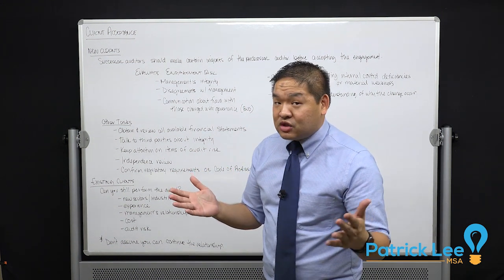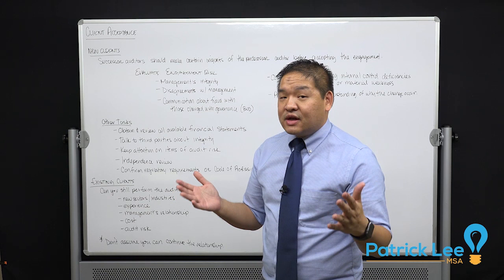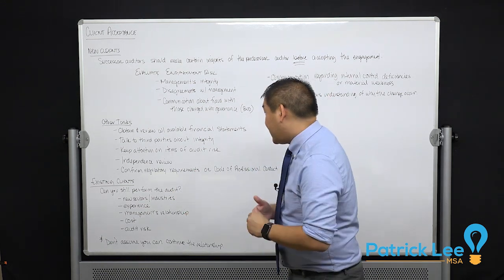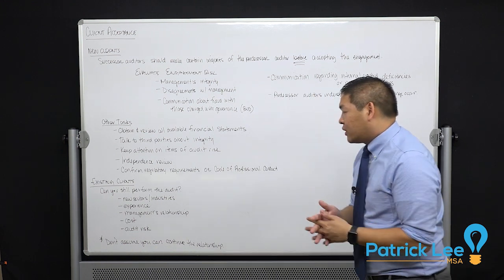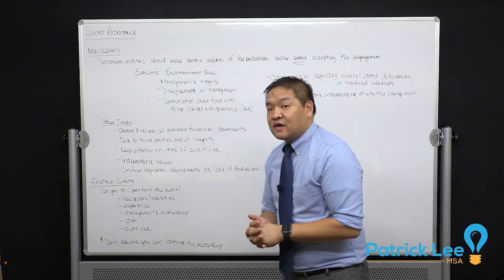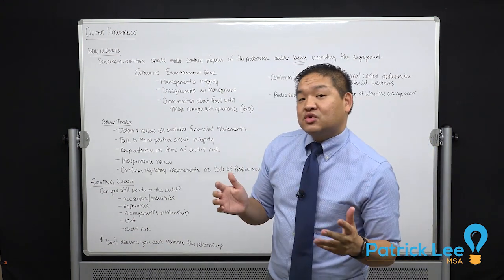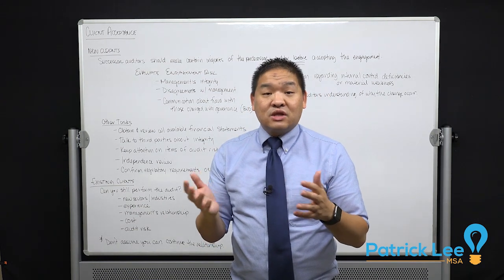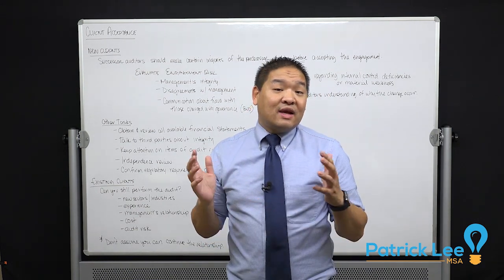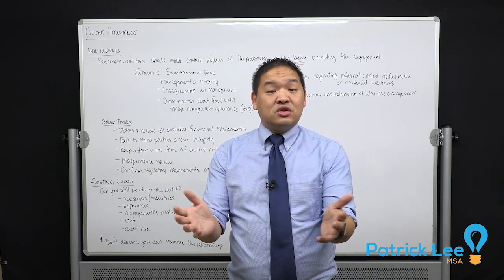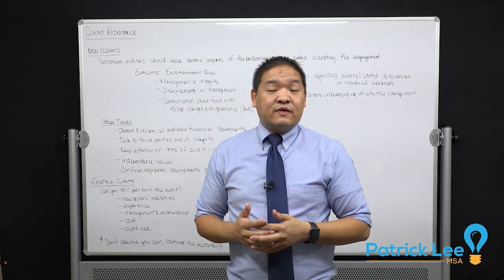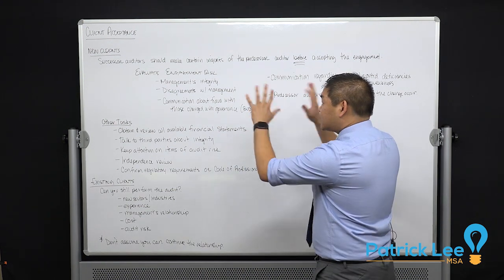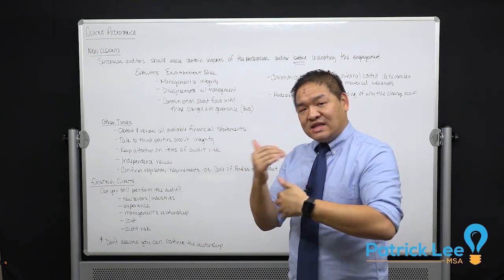We're going to review our independence — if we're not independent, maybe we can't do the audit. So we'll ask the people who might be doing this audit whether they are independent of this client. We'll also confirm regulatory requirements or the code of professional conduct. Specific industries may require specific work or testing in order to meet those needs — and if we don't have the ability to do that, we may need to pass on this client.